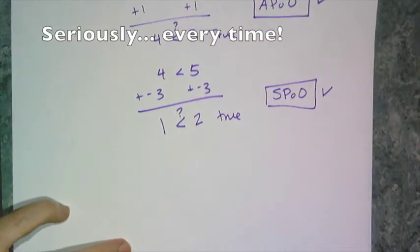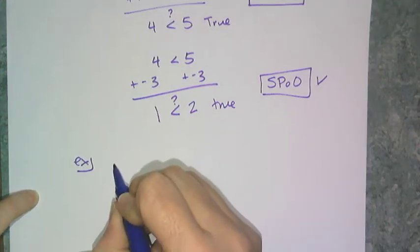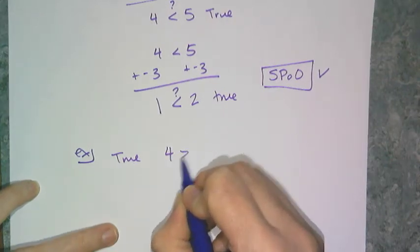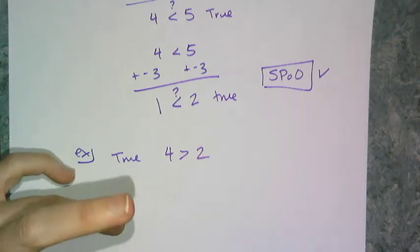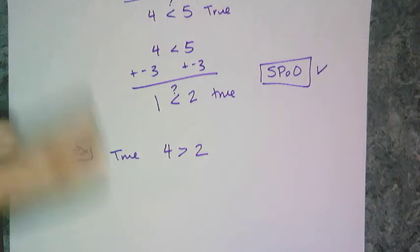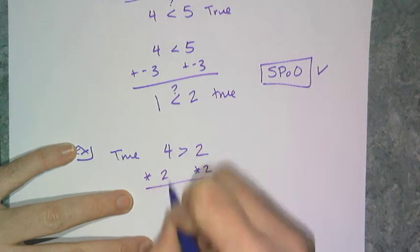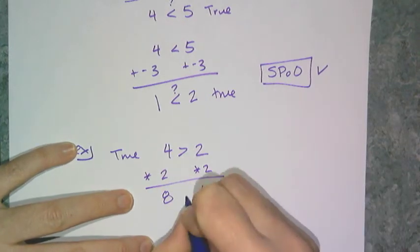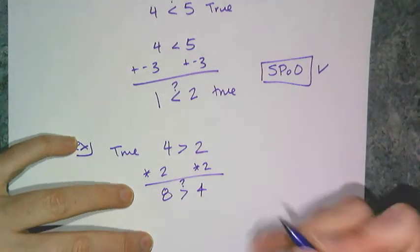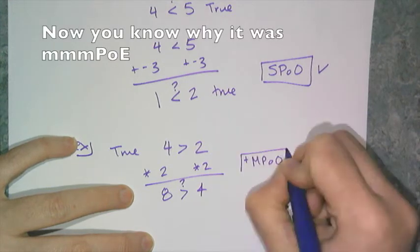Now let's check multiplication and division. Starting with something I know is true: 4 is greater than 2. Let's check multiplication — I have two types of numbers to check: positive and negative. Multiplying by positive 2, I get 8 and 4. Is 8 greater than 4? Yes it is. So I have the positive multiplication property of order — that totally works.